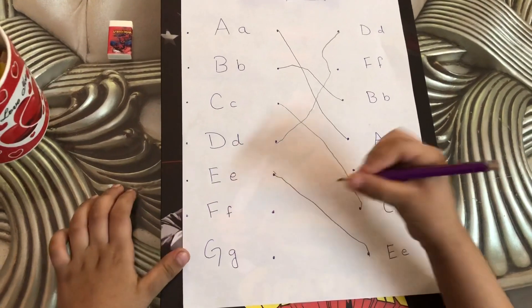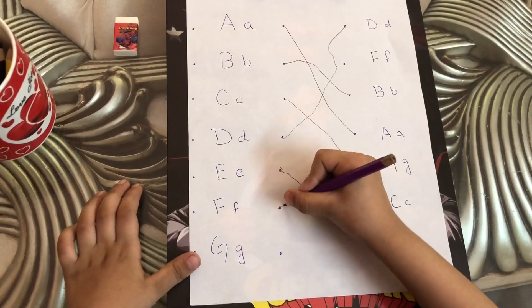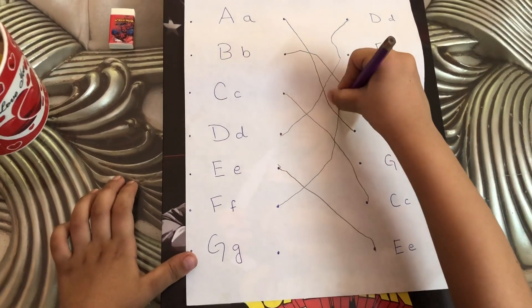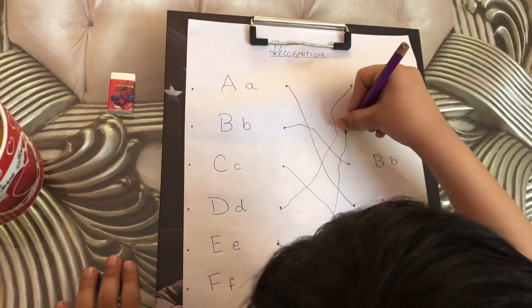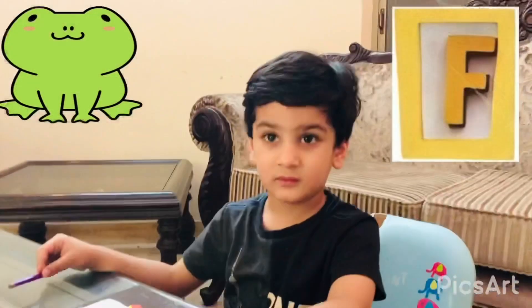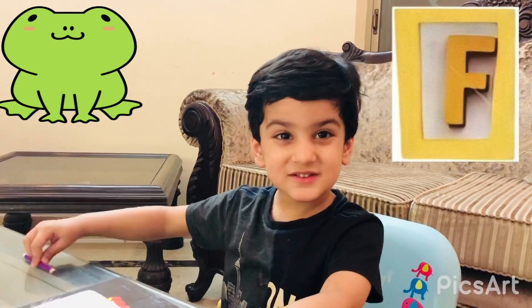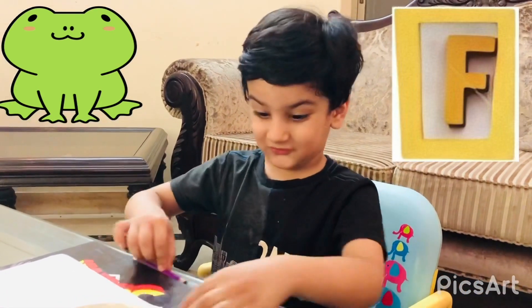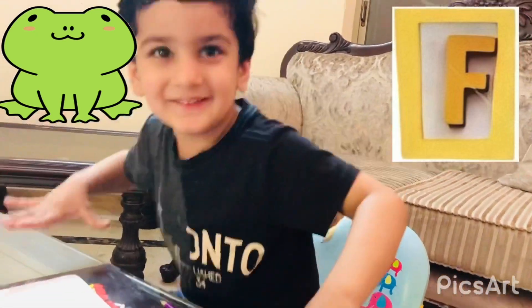This is F. What is F for? Now join them. Now tell me — F for frog and fish! Do you like fish or frog? Frog! Why? Because I like seeing them jumping.